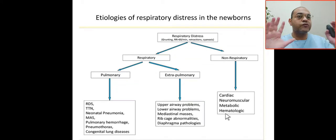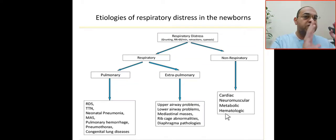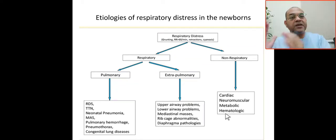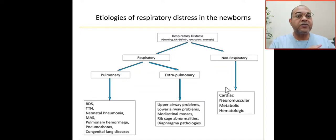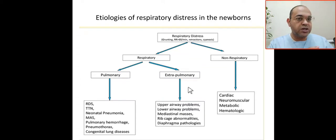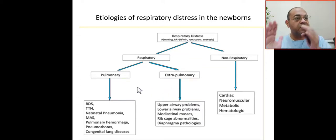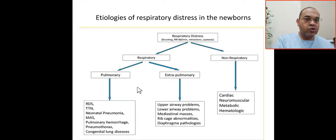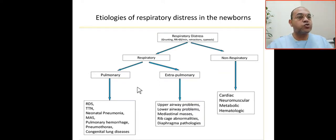What are the most common causes of respiratory distress in the newborn? It will be respiratory and non-respiratory. Non-respiratory: cardiac, neuromuscular, metabolic, and hematological disorders. Respiratory: pulmonary and extra-pulmonary. Pulmonary: RDS and its complications — pulmonary hemorrhage, pneumothorax, pneumonia, meconium aspiration, or congenital lung problems.